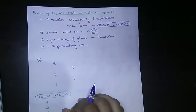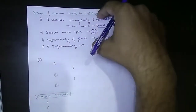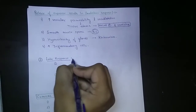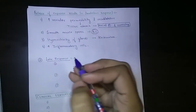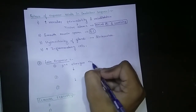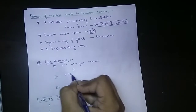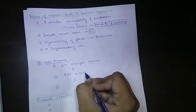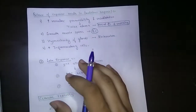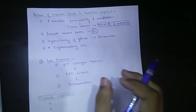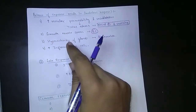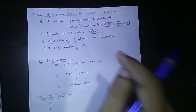Now coming to the second pathogenesis, which is the late response. There are three steps in the late response. Second allergen exposure causes release of PAF, leading to inflammation. It should be noted that the early response leads into the late response — if the early response does not occur, the late response will definitely not occur.